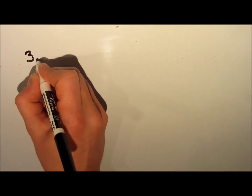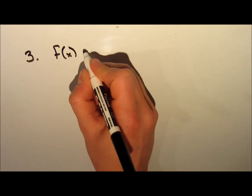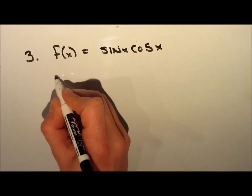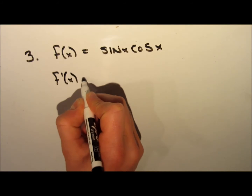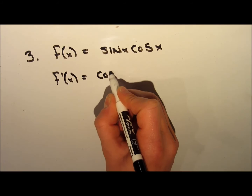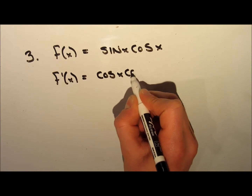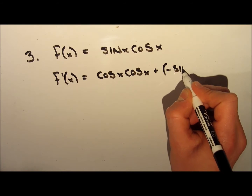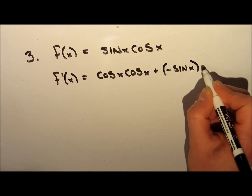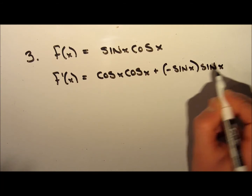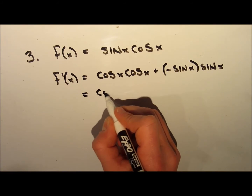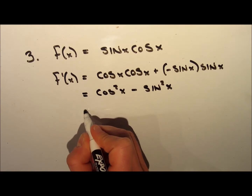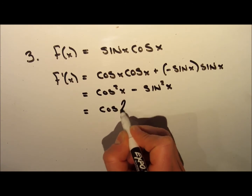Now let's take a look at the third example. We want to take the derivative of f of x equal to sine x multiplied by cosine x. To take this derivative, we're going to use the product rule, which still applies to sine and cosine functions. We take the derivative of the first term — the derivative of sine x is cosine x — and multiply by the second term, cosine x. Then we add the derivative of the second term: the derivative of cosine x is negative sine x, multiplied by the first term, sine x. This simplifies to cosine squared x minus sine squared x, which is a trig identity that simplifies further to cosine of 2x.